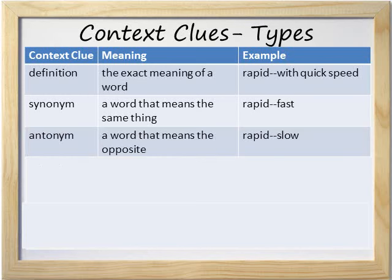The third type of context clue we'll learn about is an antonym. An antonym is a word that means the opposite. For example, the opposite or antonym of rapid is slow.